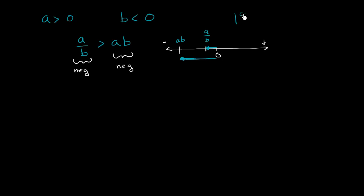We know that the absolute value of a over b is going to be less than the absolute value of a times b — it's going to be not as far left of 0 as a times b is. But let's actually algebraically manipulate this inequality. We could multiply both sides by b.